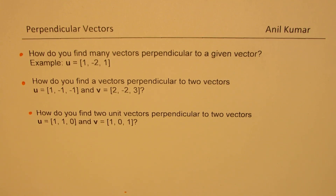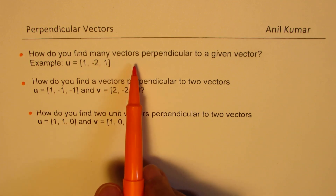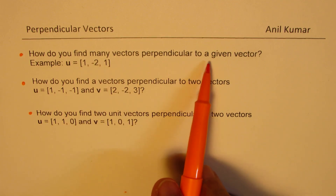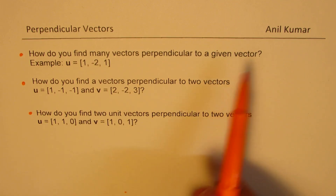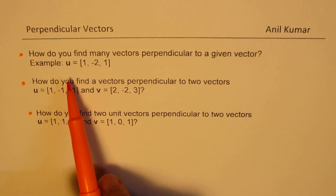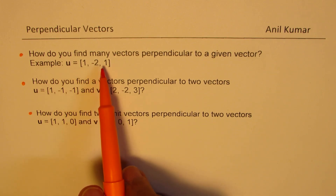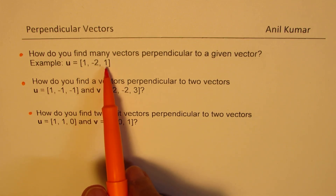Here are three related questions. The very first one is: how do you find many vectors perpendicular to a given vector? For example, you can take vector u equals to (1, -2, 1).